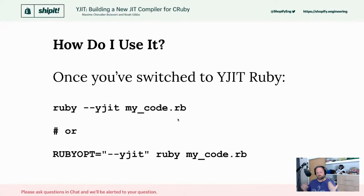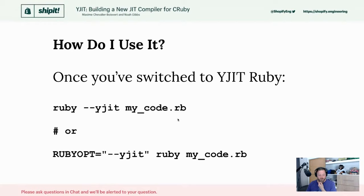So you've installed it — how do you use it? Once you've switched to a Ruby with YJIT, you can type 'ruby --yjit' followed by any Ruby code to run it with YJIT enabled. If you want YJIT set for every Ruby invocation, you can set the environment variable RUBYOPT to '--yjit', which automatically passes command line parameters through to every Ruby process. So if you set RUBYOPT to '--yjit', everything that runs Ruby is going to run it with YJIT active.